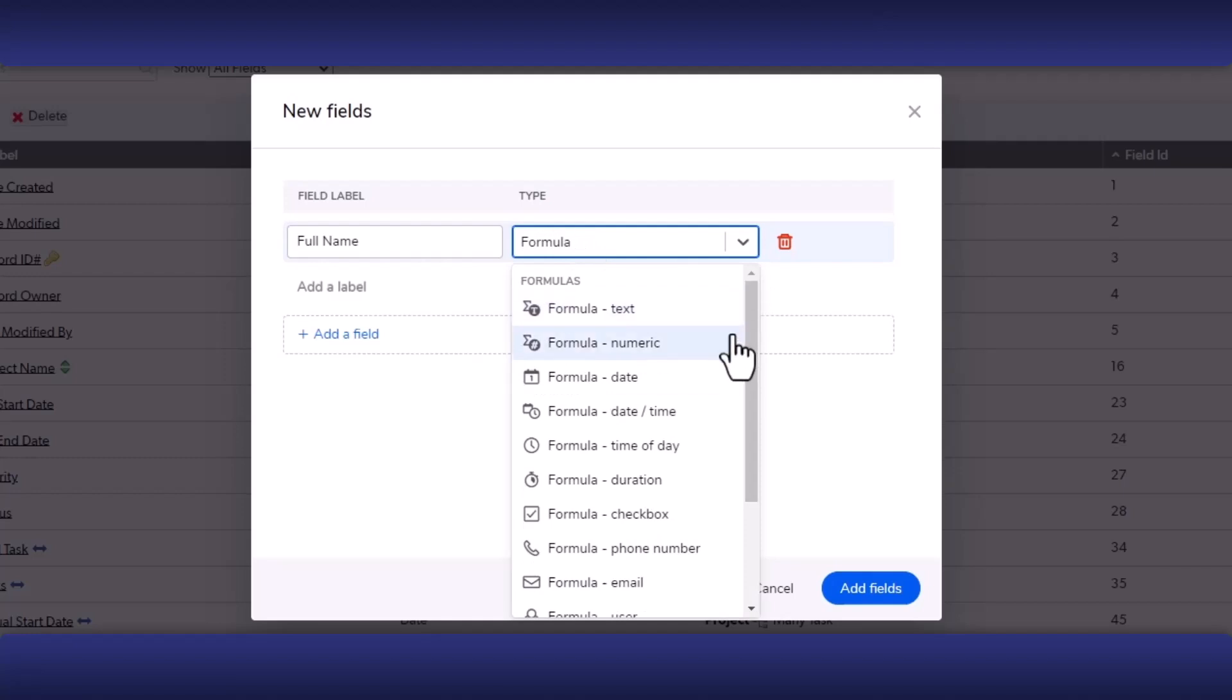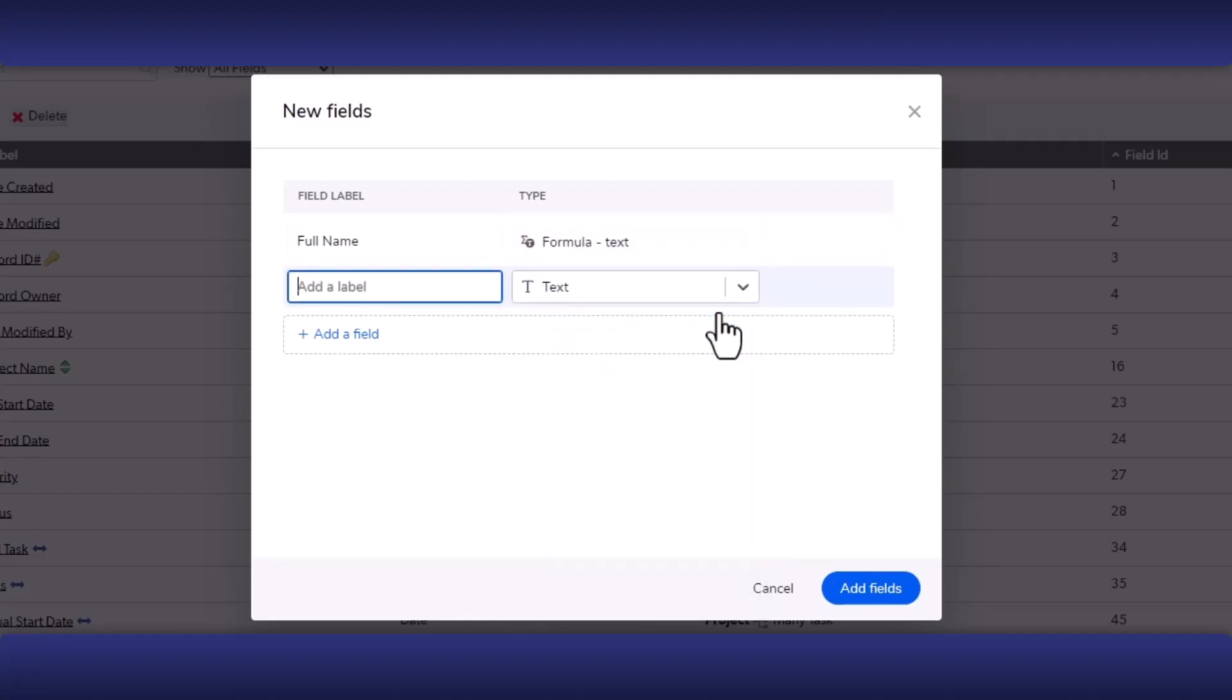We'll cover the different data types later in this video. You should try to select the correct formula type. However, you can change the type of the field later if needed. After you have the name and the type, you can click Add Fields.